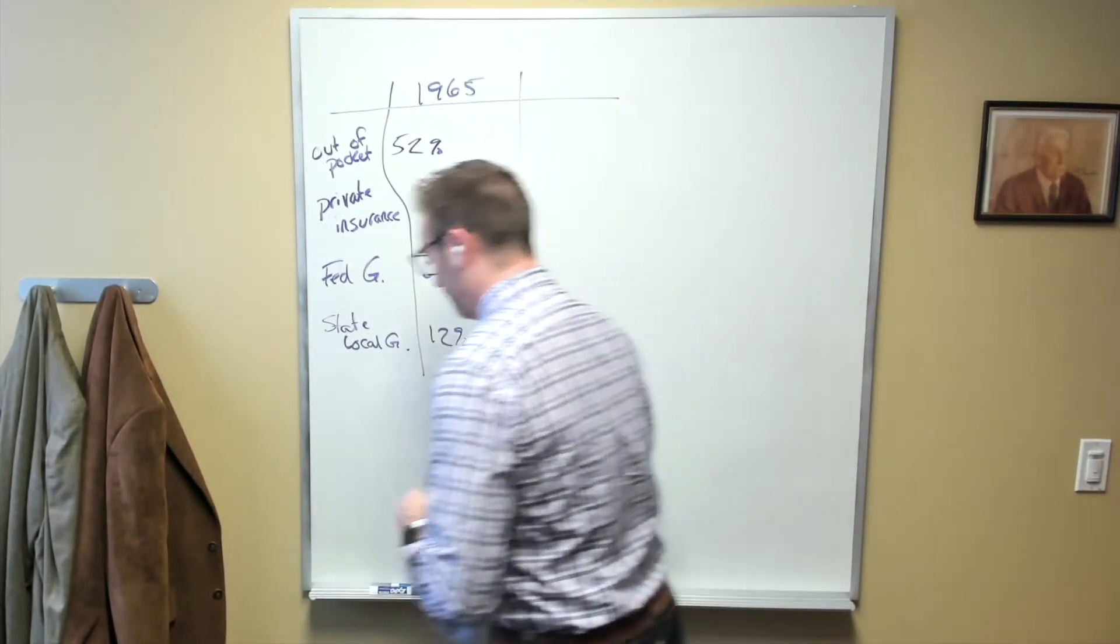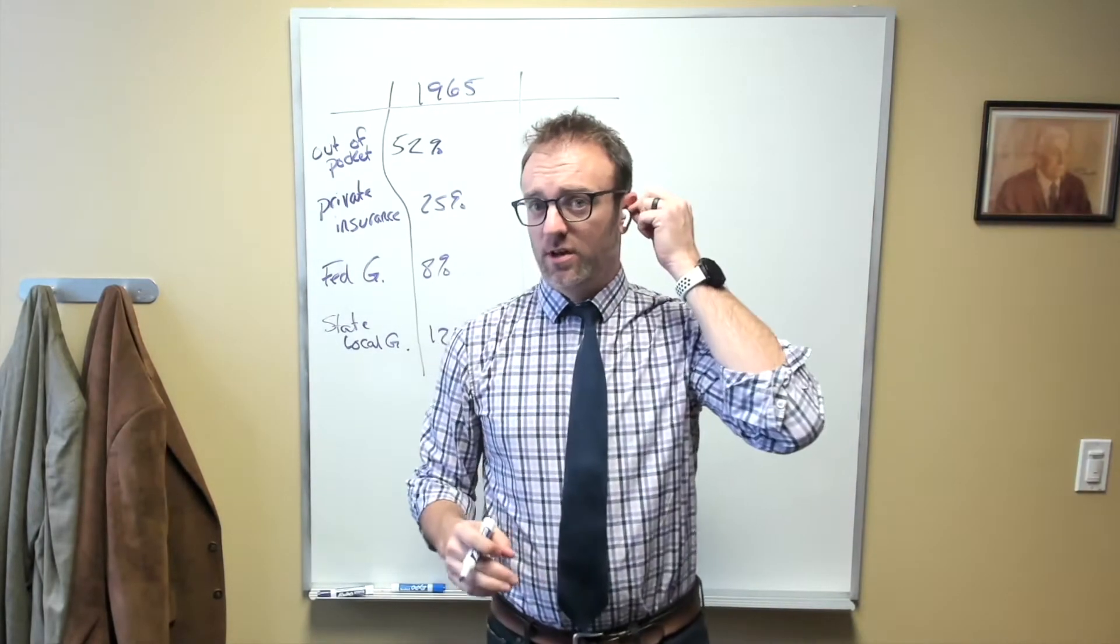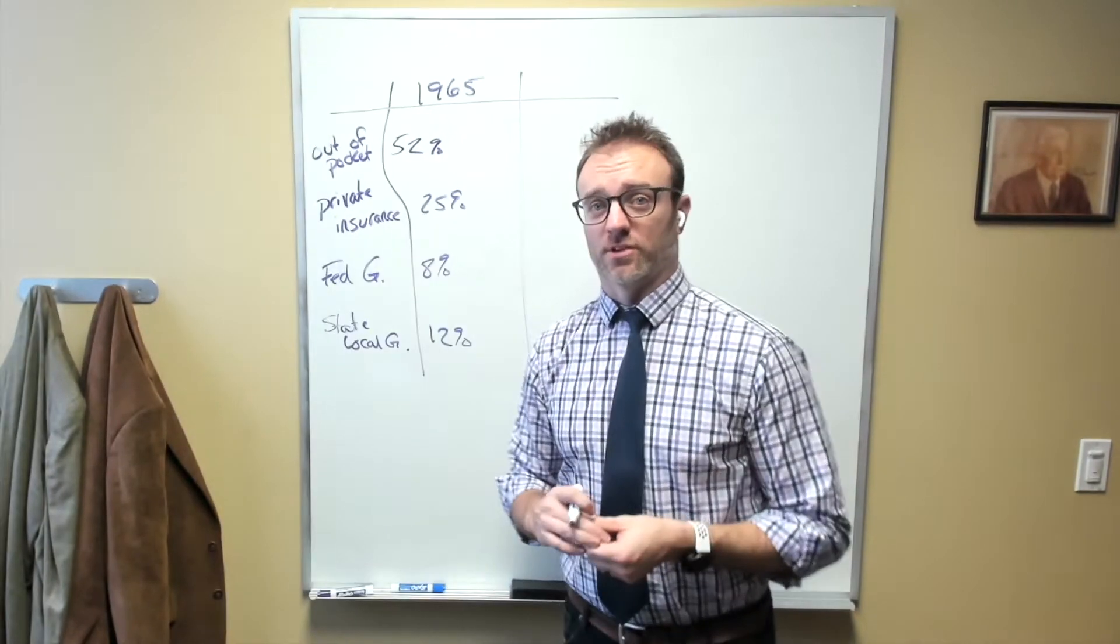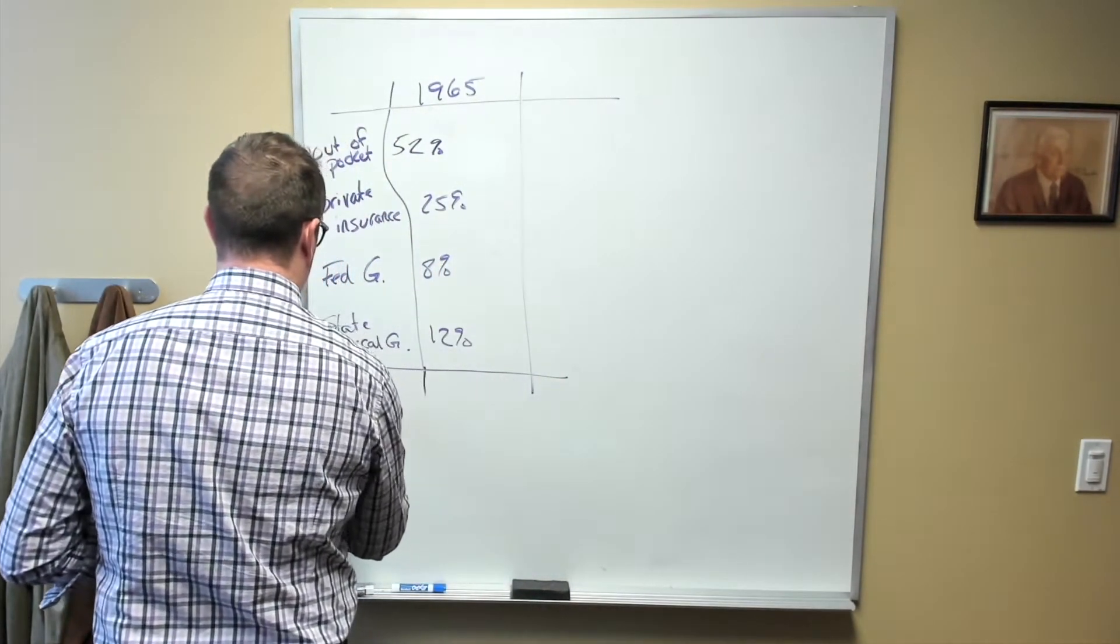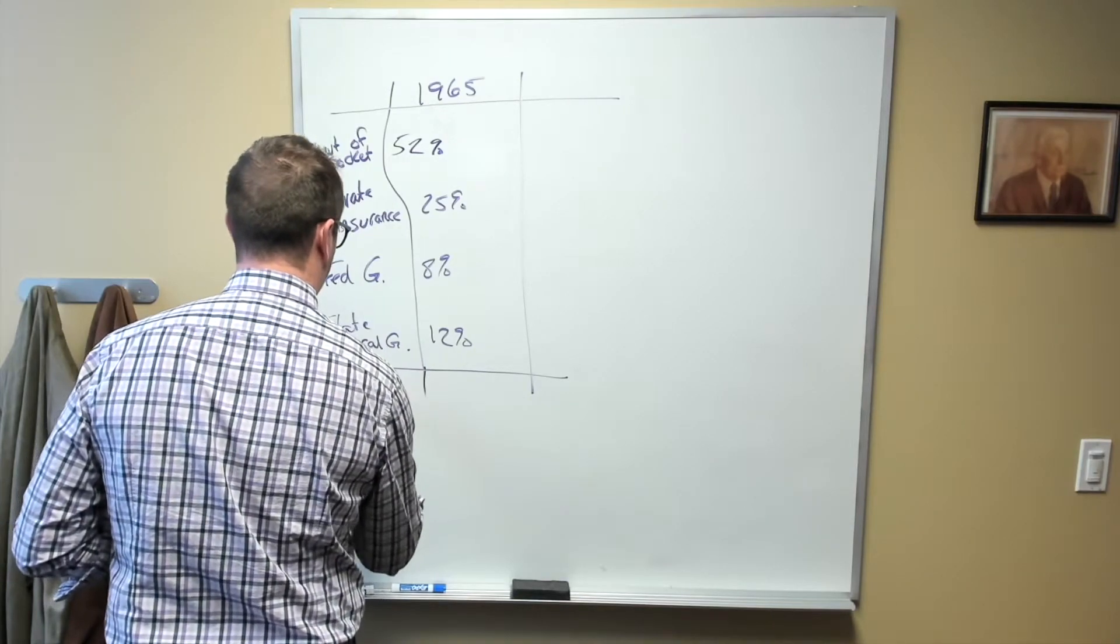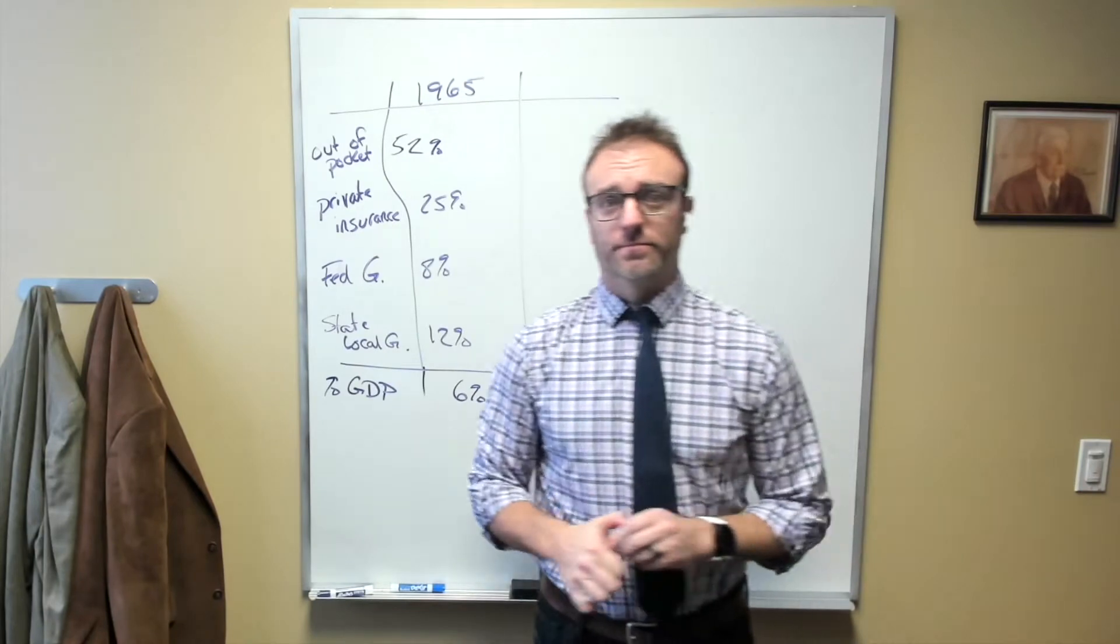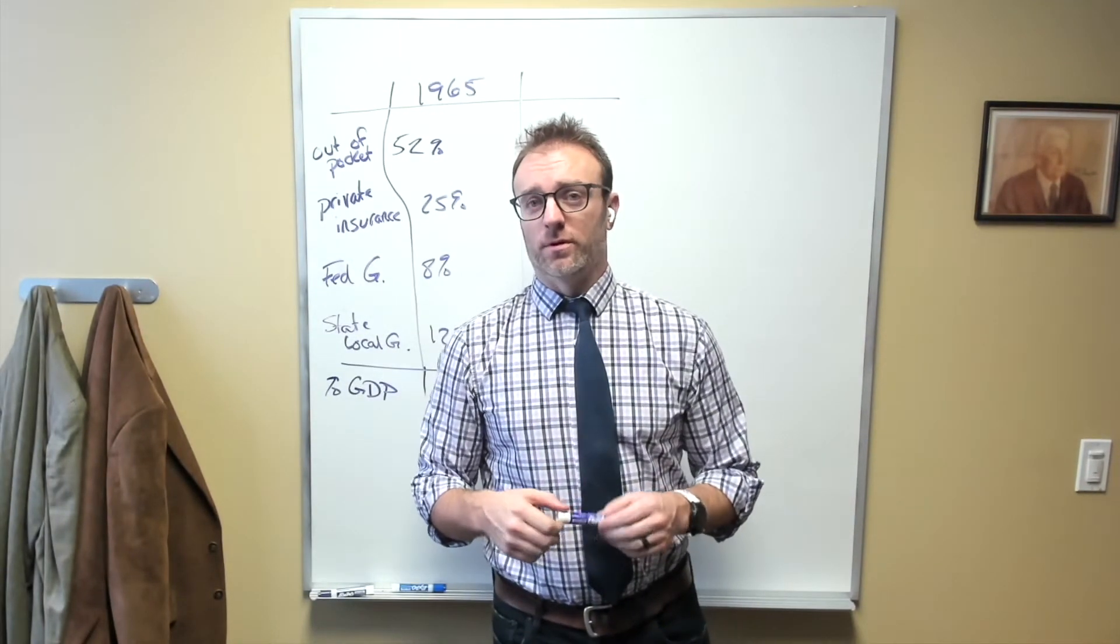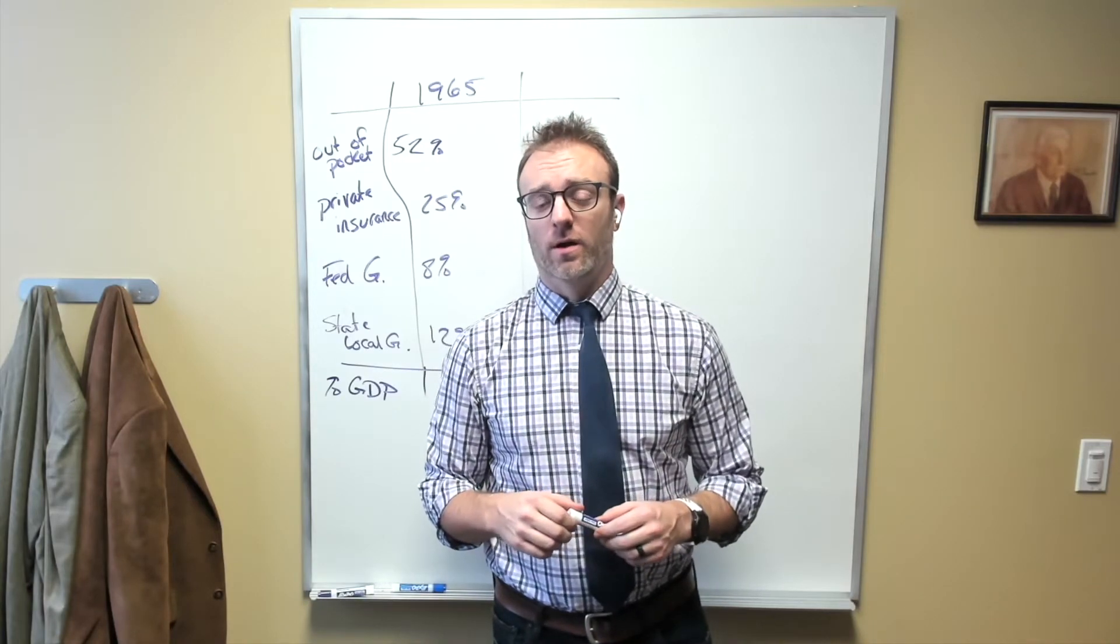In other words, for every dollar that was paid in the U.S. in 1965 on health care, over half of it came from us, from our own pockets. 25% came from private insurance. The federal government paid a mere 8%, and the remaining 12% or so came from state and local governments. The total health care cost of the U.S. in terms of GDP, which is just short for gross domestic product, the U.S. spent as a percent of GDP a mere 6% on health care. To put this another way, for every dollar that people earned in 1965, 6 cents went toward health care on average.